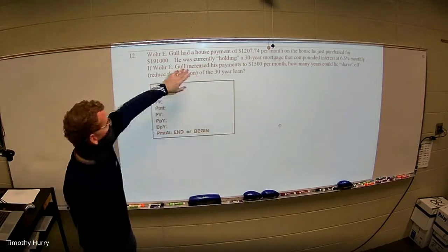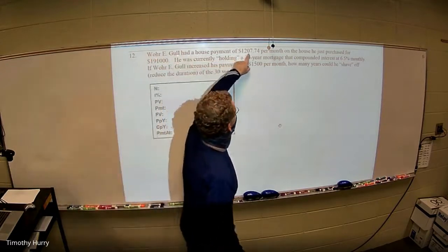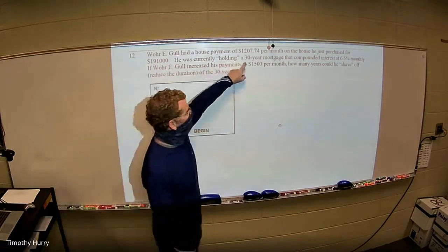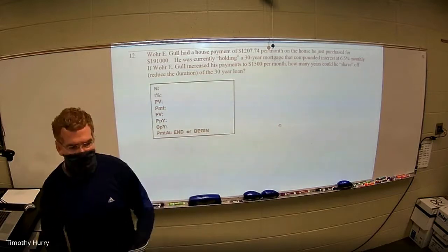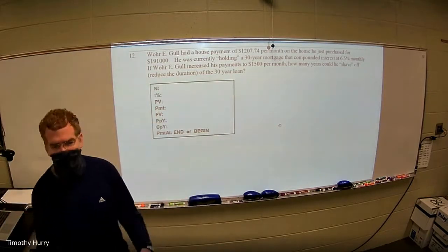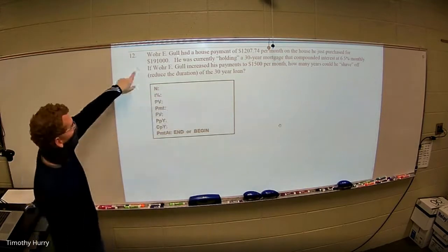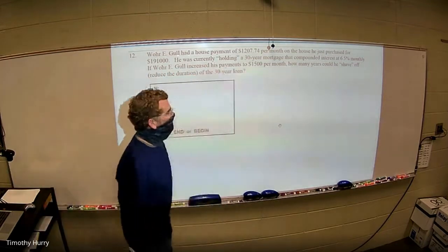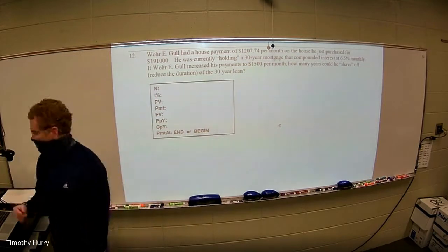But anyway, I did want to show you this. So this guy, War Eagle, had a house payment of $1,207.74. He purchased it for $191,000. He's currently holding a 30 year mortgage at six and a half percent. And again, interest rates are so much lower than that now. But I made this key out and it takes time to redo a key, scan it in, upload it. But I'm just going to keep using this information. But six and a half percent. What would happen if he increased his payments to $1,500 a month? How many years can he shave off his mortgage? So I just wanted to show you this.